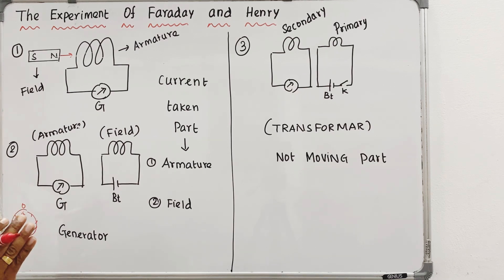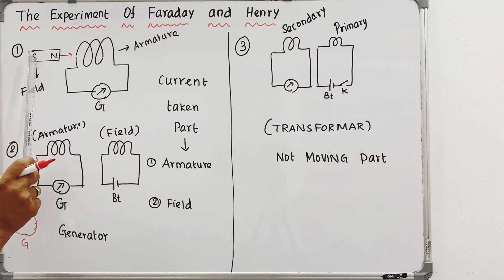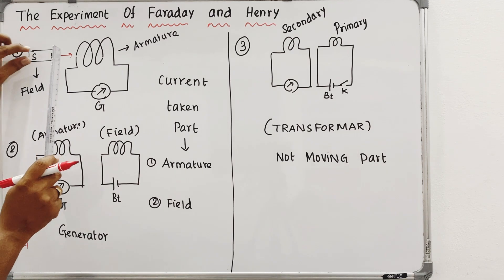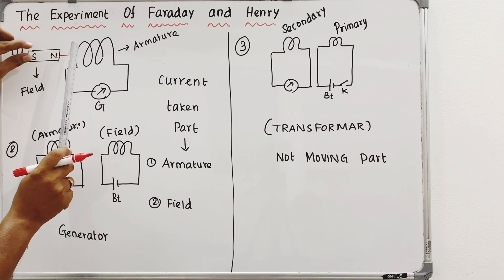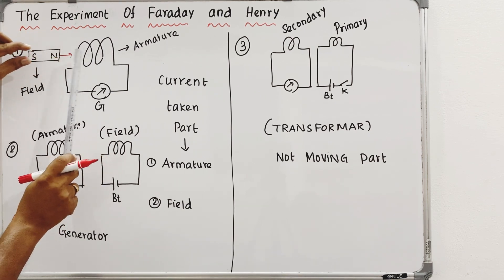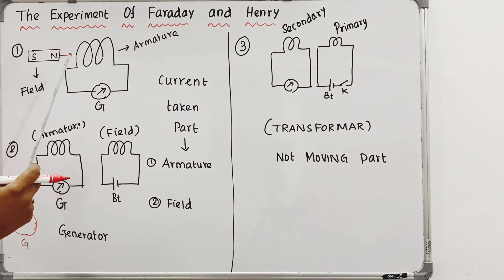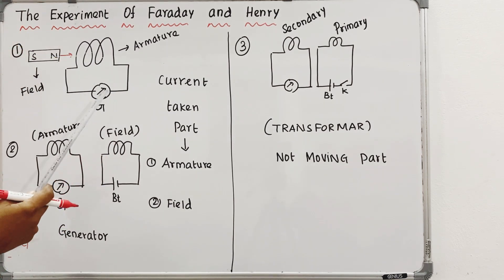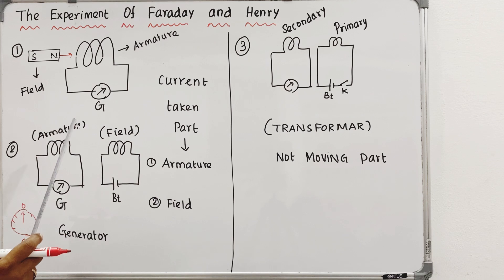Relative changes. That means that when you put the magnetic field and the relative motion is zero, the current is going to be zero.